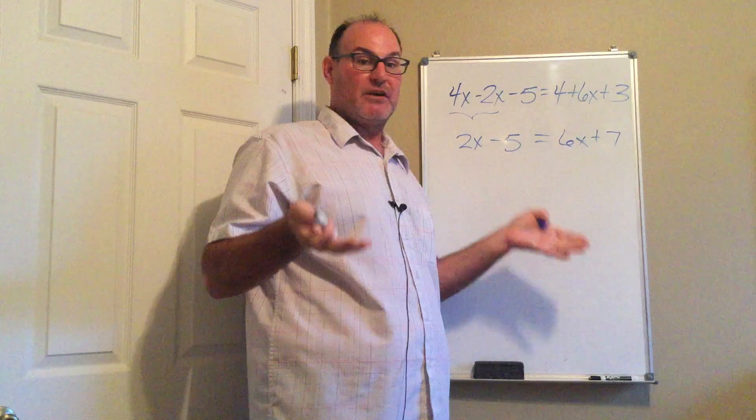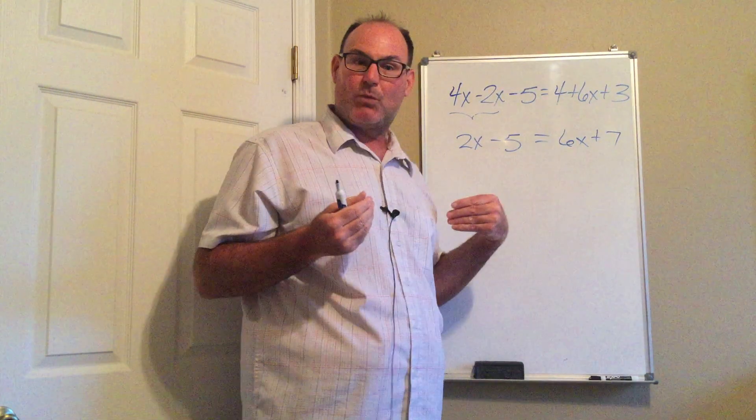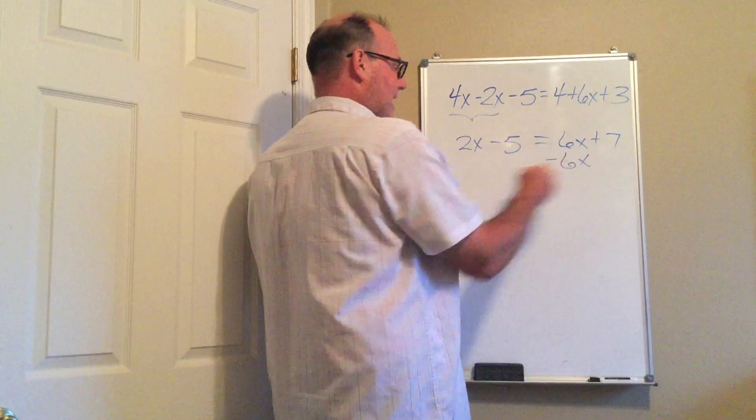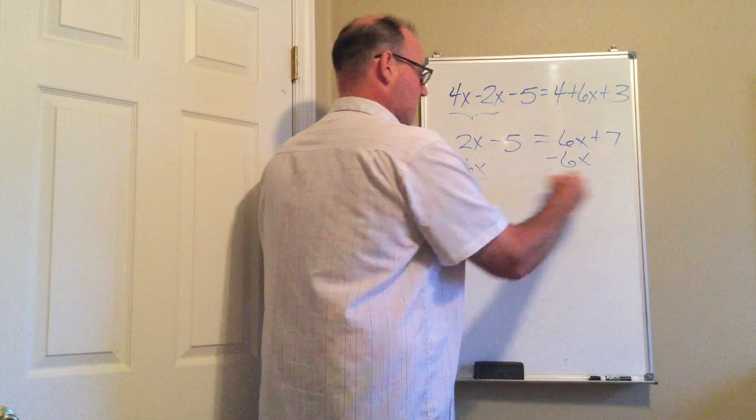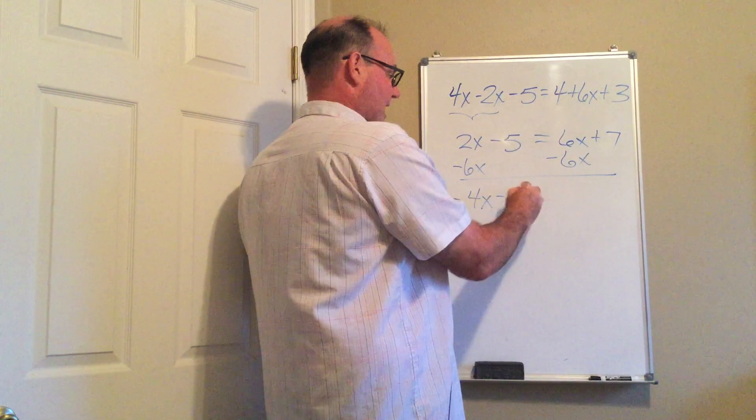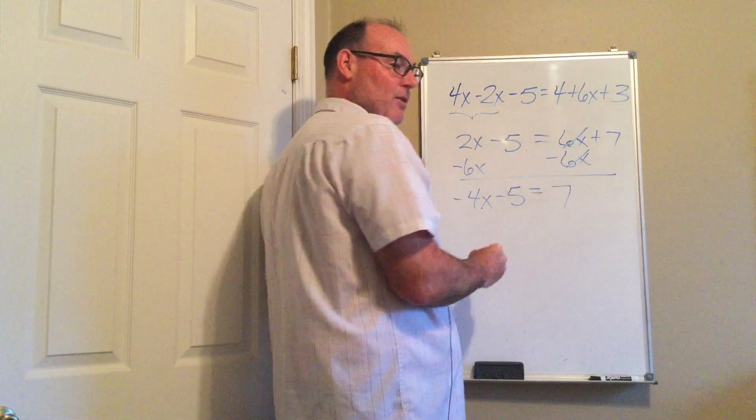Now this equation looks very similar to the one in the previous video if you watched it. I'm going to get the x's on one side, the numbers on the other side. So I'm going to subtract 6x. 2x minus 6x is negative 4x. I've done nothing with the minus 5 so far. Bring the 7 down.